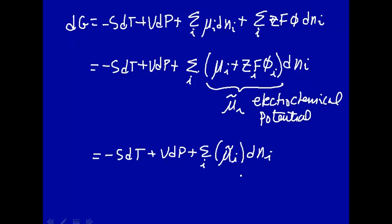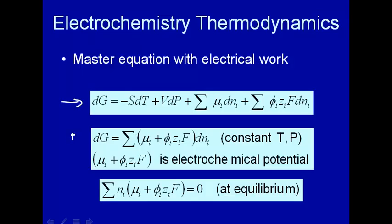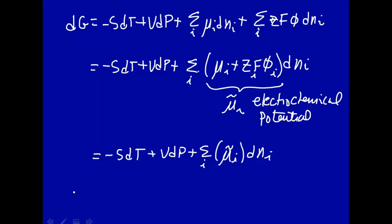There's the master equation for chemical thermodynamics in which we included electrical work, which we have to do if our system contains ions. Now let's look at what's going to happen at constant temperature and pressure. Constant temperature, that goes away. Constant pressure, that goes away. The incremental change in free energy when you add a certain number of moles will just be the sum of mu tilde i dNi. Exactly the same thing we had before, except now we're using electrochemical potential instead of chemical potential.